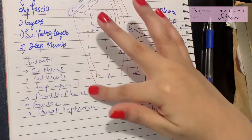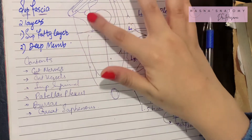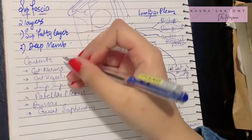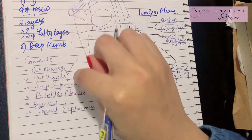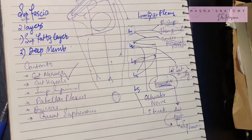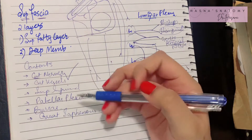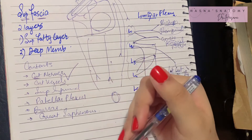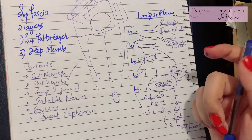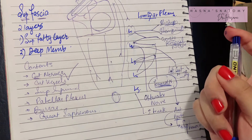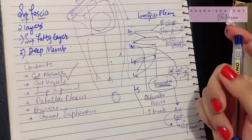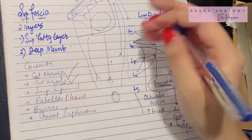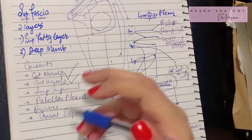That covers the cutaneous innervation of the thigh. The next content of the superficial fascia are the vessels: the external pudendal artery, the superficial epigastric artery, and the superficial circumflex iliac artery. These are the vessels that lie in the superficial fascia of the thigh.